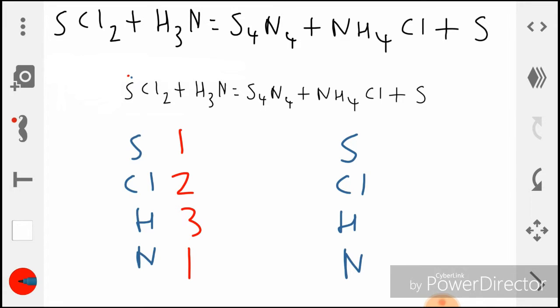On the right side there are five sulfurs, there's one there and one there as you can see. There is one chlorine, there are four hydrogens, and there are five nitrogens.